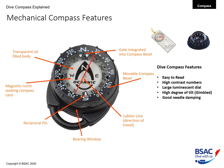For dive compass features, the compass needs to be easily read in a low visibility environment. Therefore it needs high contrast numbers and a large luminescent dial to aid night diving. We also need a high degree of tilt or gimbal so that in turbulent waters the mechanical compass will still work when slightly off horizontal — these can work up to 20 to 30 degrees from horizontal. Because of that turbulent environment, we also need good needle damping, provided by the transparent oil-filled body.